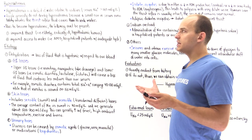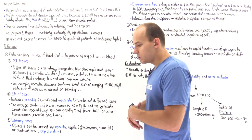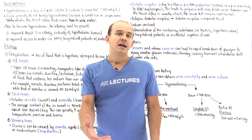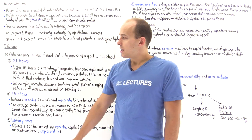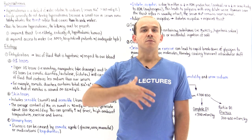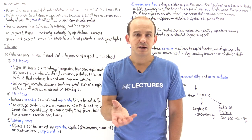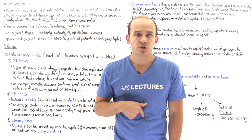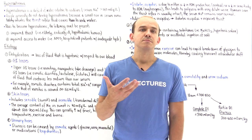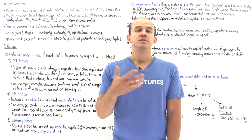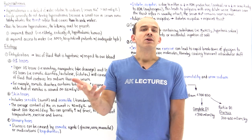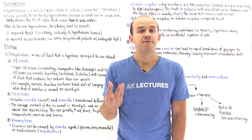We can become dehydrated by losing fluid from a variety of places, including the GI tract, skin, and kidneys. GI losses include fluid from above — vomiting and nasogastric tube suctioning — and from below, including osmotic diarrhea, medications such as lactulose that induce osmotic diarrhea, and fistulas.